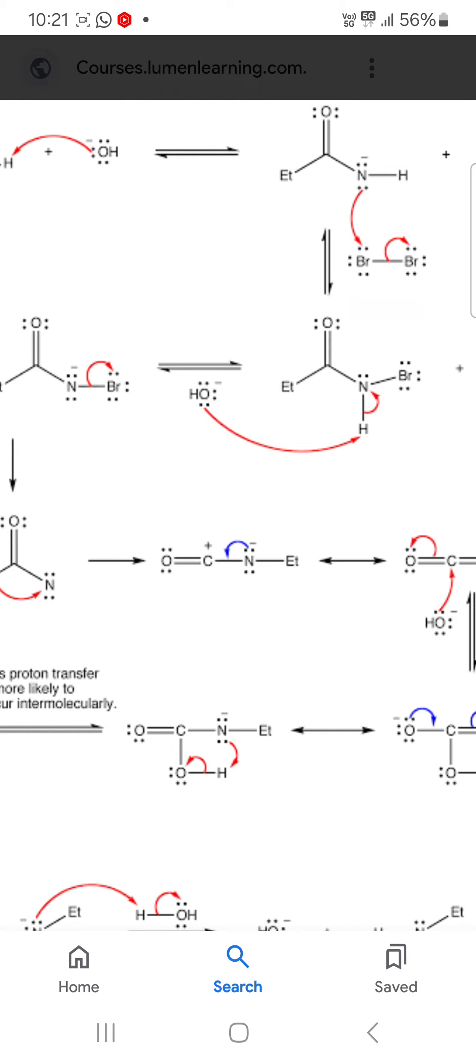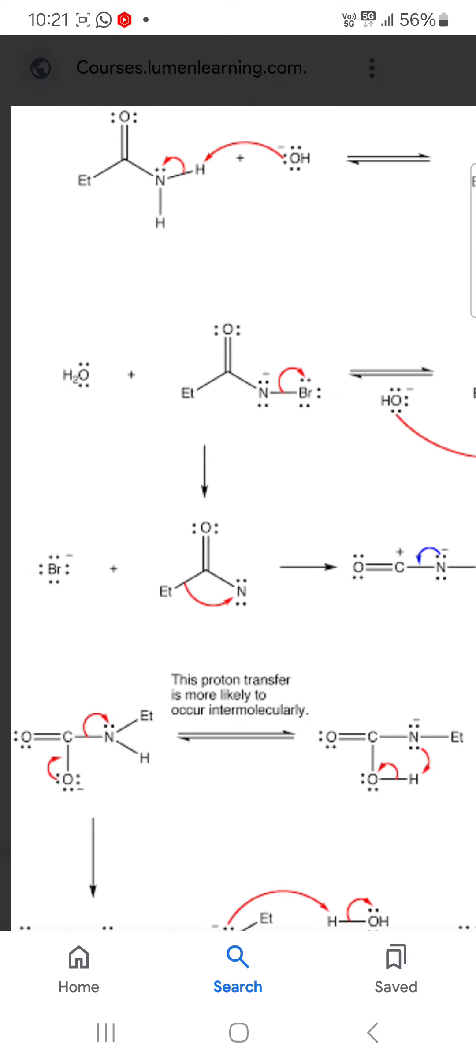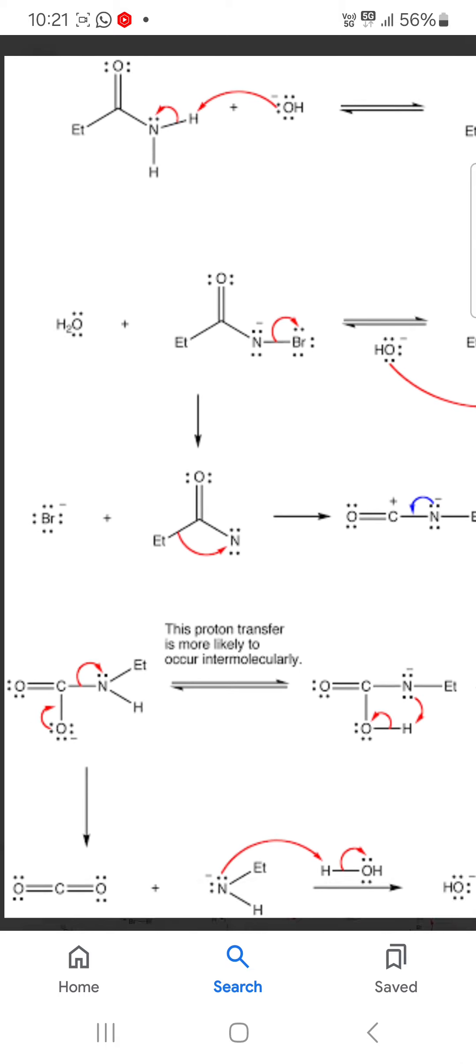Further, base approaches proton and breaking of nitrogen-hydrogen bond. Then it becomes ethyl-CO-NH-Br and water.